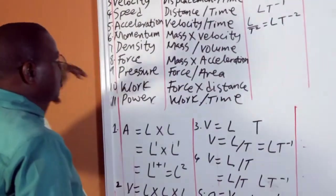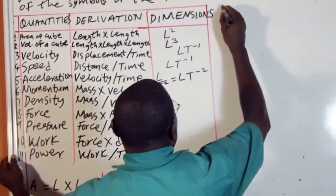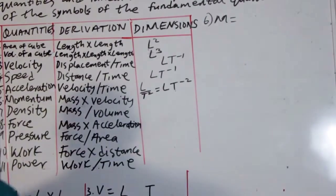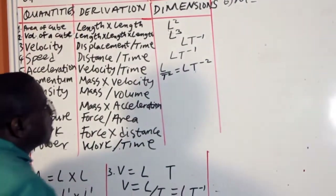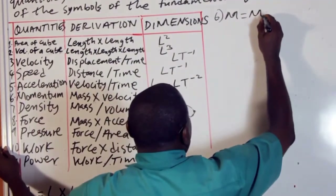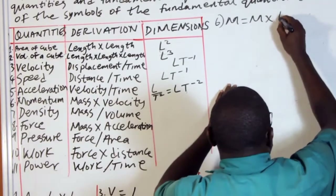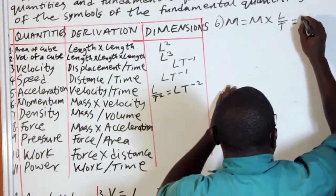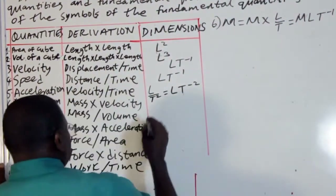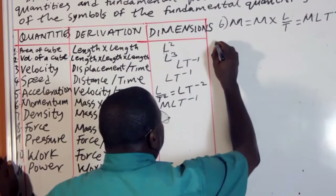Number 6 is momentum. The equation for momentum is mass times velocity. The fundamental quantity of mass is M, and that of velocity is LT raised to power minus 1. Therefore, momentum gives us M times LT raised to power minus 1, so momentum is MLT raised to power minus 1.